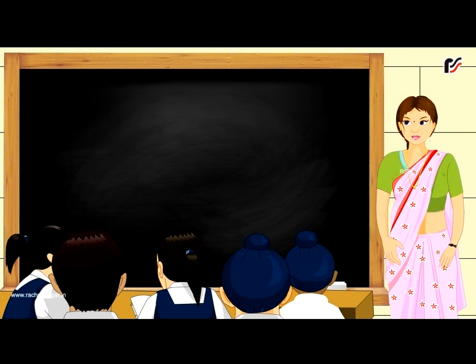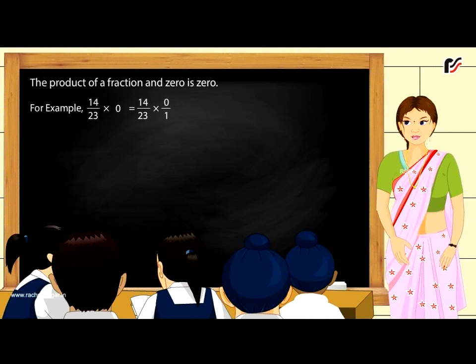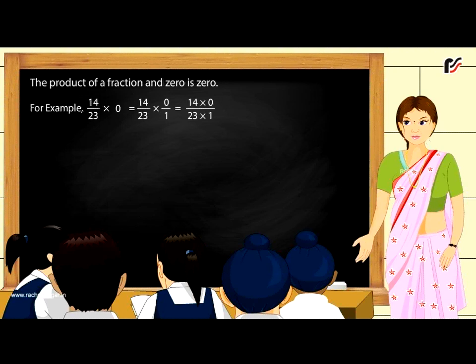The product of a fraction and 0 is 0. For example, 14 by 23 multiplied by 0 equals 14 by 23 multiplied by 0 by 1, which equals the product of 14 and 0 divided by 23, which equals 0.